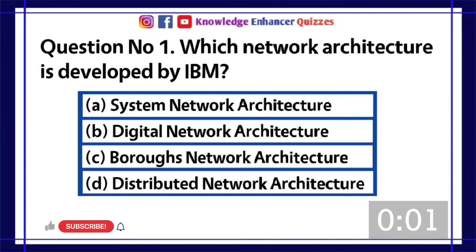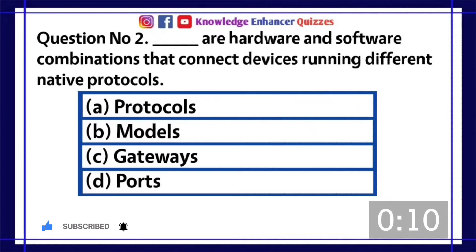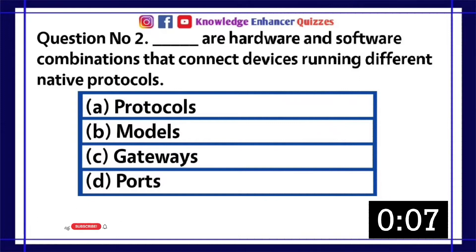Option A is the right answer. Question number 2: Hardware and software combinations that connect devices running different native protocols. A. Protocols. B. Models. C. Gateways. D. Ports.